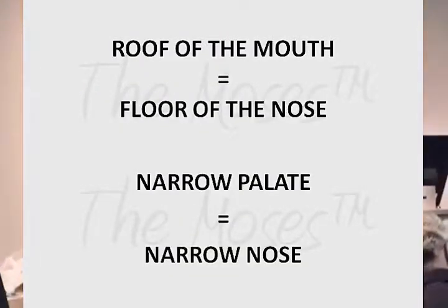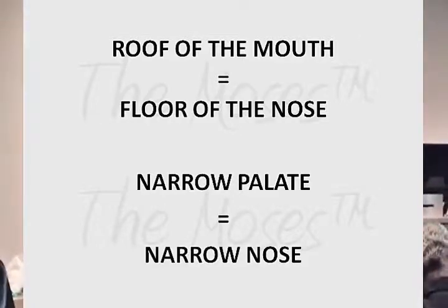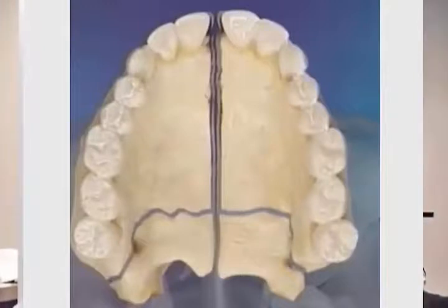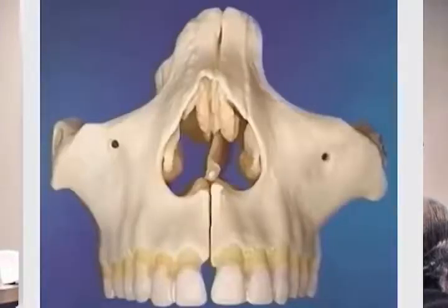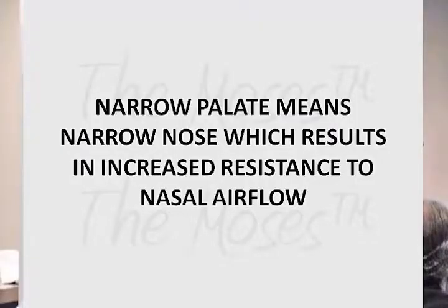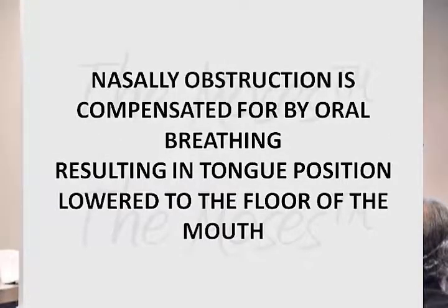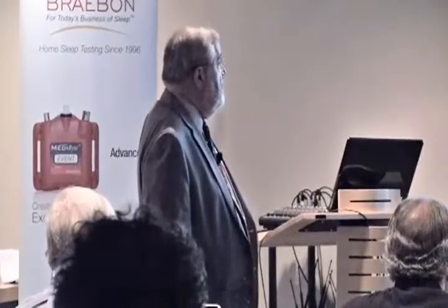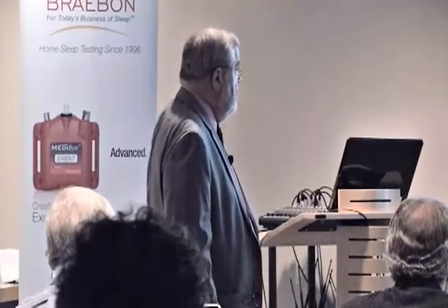Let's talk about palates. The roof of the mouth is the floor of the nose — a narrow palate results in a narrow nose, and a narrow nose means obstructed nasal breathing. The wider the roof of the mouth, the less nasal obstruction. A narrow palate means narrow nose, increased resistance to airflow. Nasal obstruction is compensated for by oral breathing, and in order to breathe through the mouth, you have to lower the tongue to the floor of the mouth.